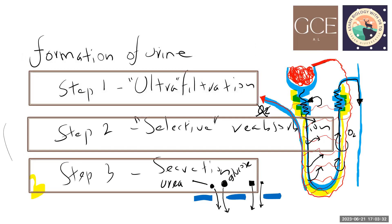Looking at the notes from last week: ultrafiltration takes place in the glomerulus, selective reabsorption takes place in the proximal convoluted tubules, loop of Henle, and distal convoluted tubule. Secretion also happens in the proximal and distal convoluted tubule.